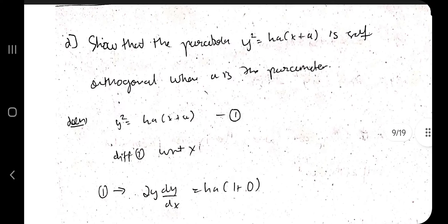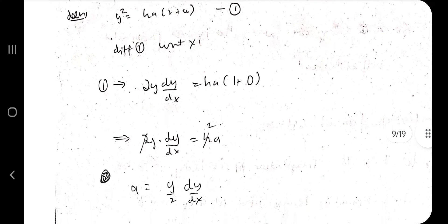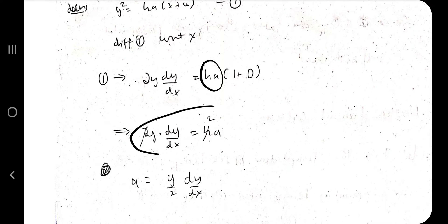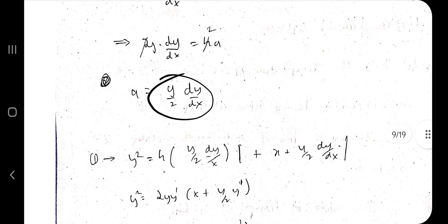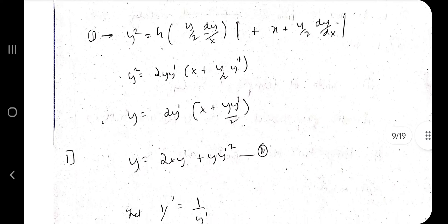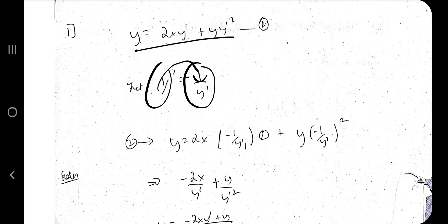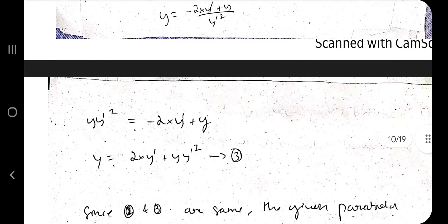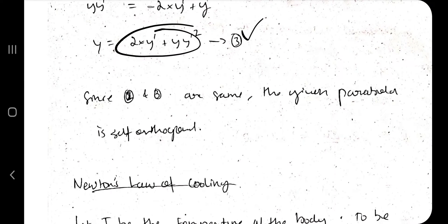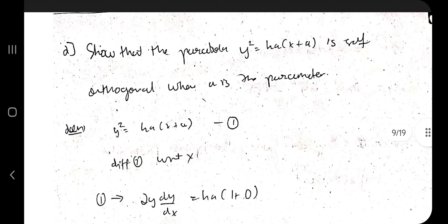For proving a curve is self-orthogonal: differentiate the given equation with respect to x, solve for the parameter a in terms of y' (dy/dx), substitute back to eliminate a, then replace y' with −1/y' and simplify. If the resulting equation is identical to the original equation, the curve is self-orthogonal — that is what we need to prove.